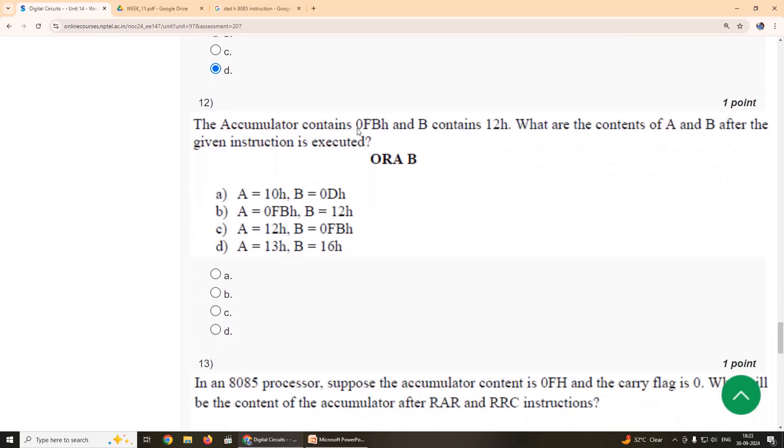Twelfth question: The accumulator contains FB and B contains 12. So what are the contents of A and B after the given instruction is executed? So the content of B is not changed. For ORA B, this is the source. The source content will be 12 as it is. So therefore, this is option B. And of course, the content of A is not changed. After ORA B, option B. Our suggestion is option B. A is FB and B is 12.